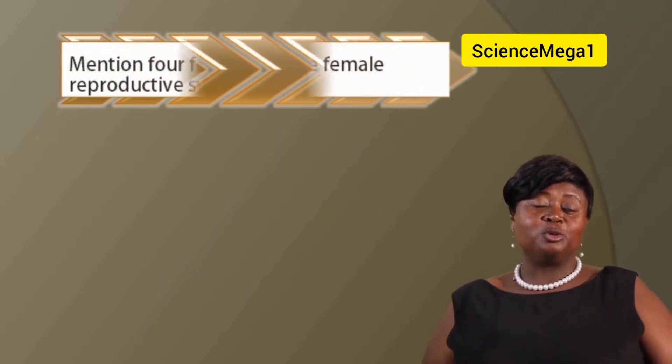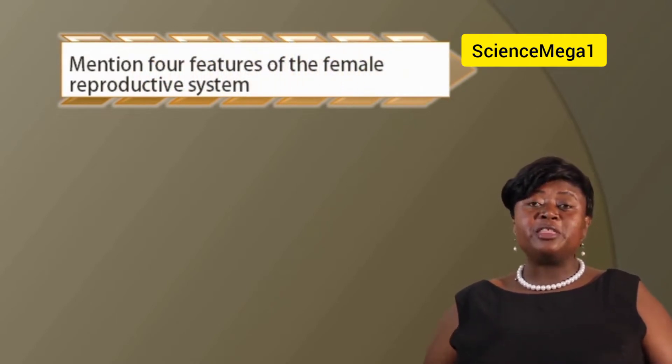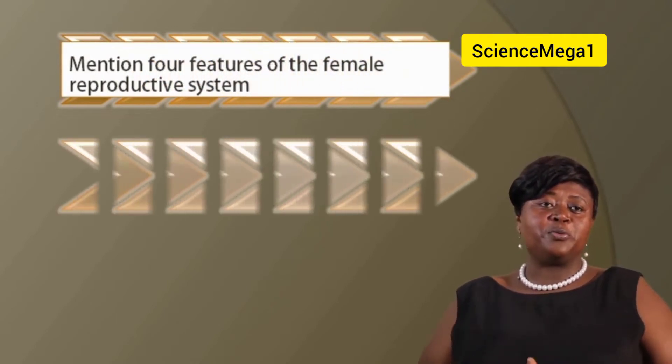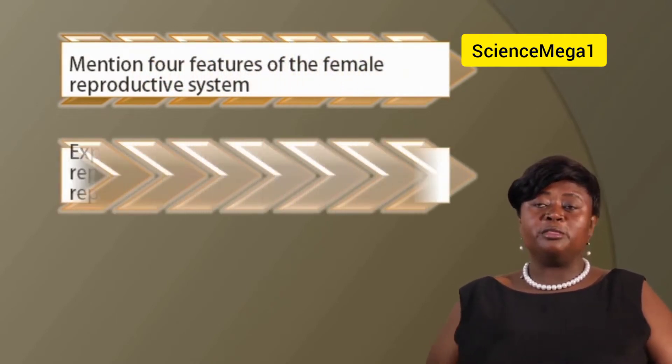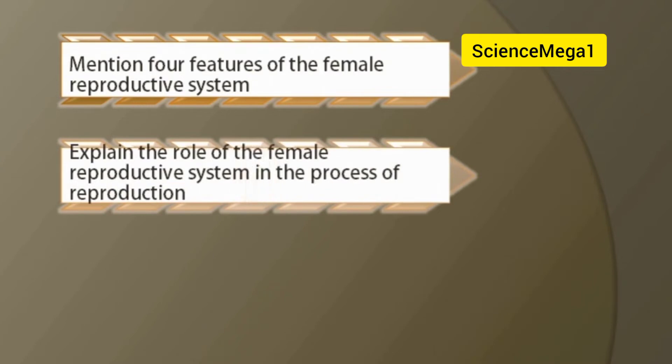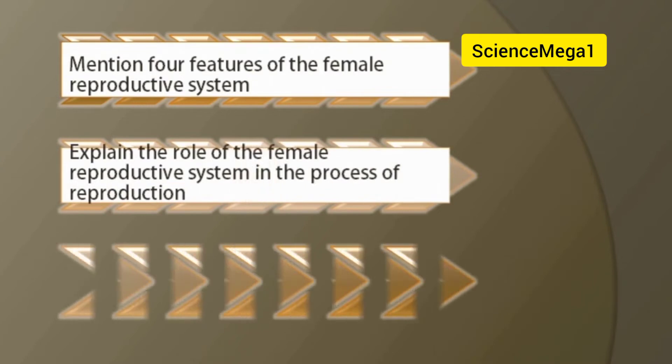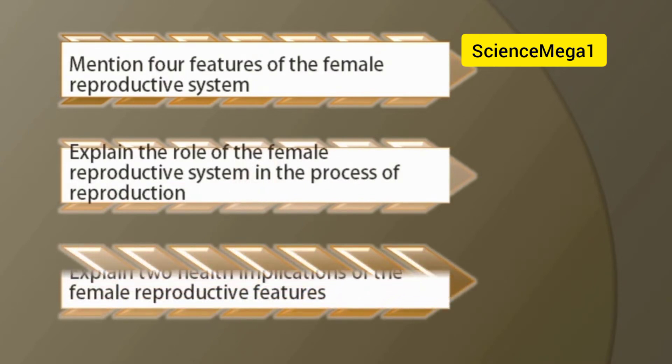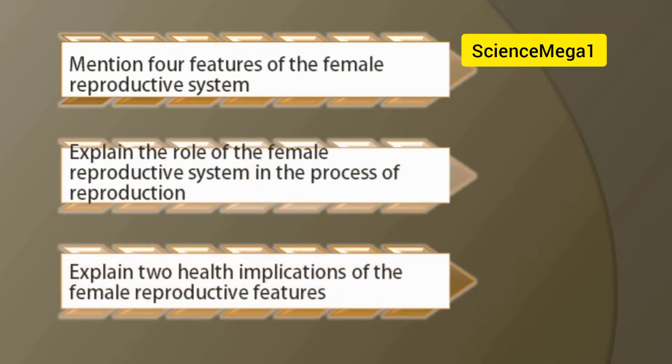By the end of today's lesson you will be able to: one, mention four features of the female reproductive system; two, explain the role of the female reproductive system in the process of reproduction; three, explain two health implications of the female reproductive features.